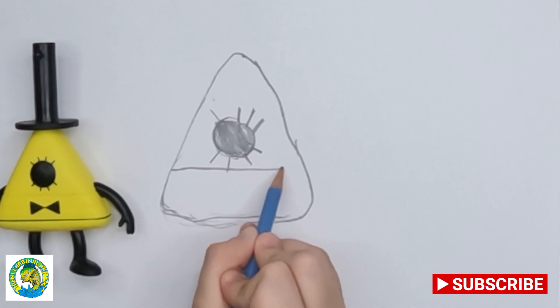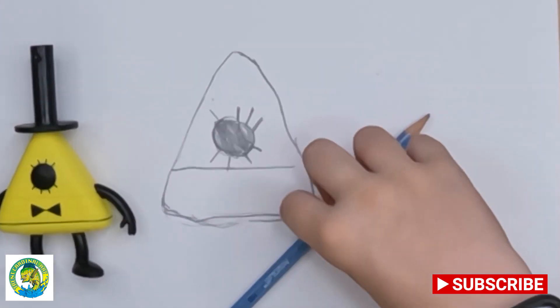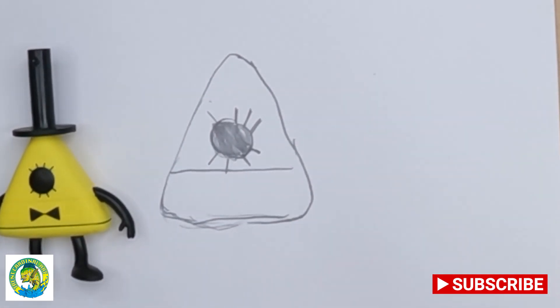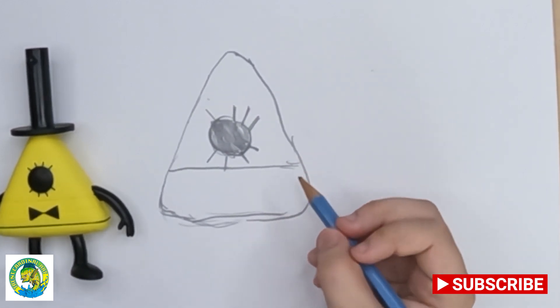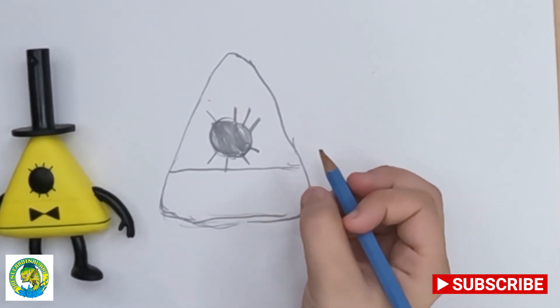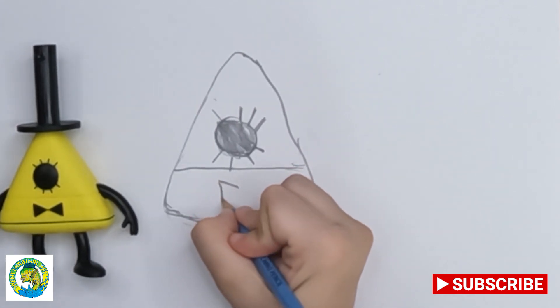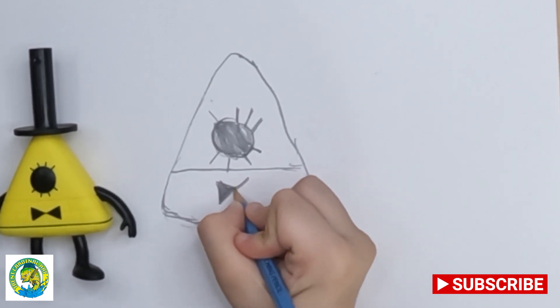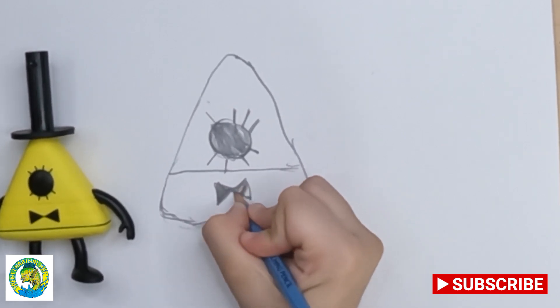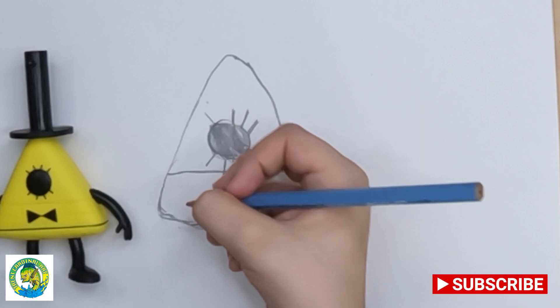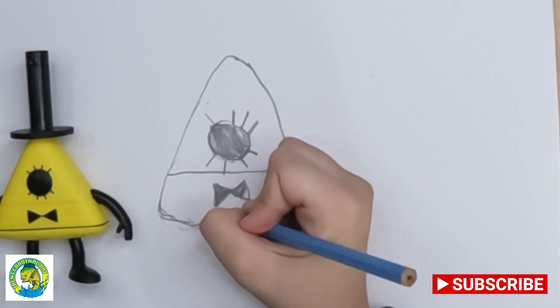Then you're going to make a line across. Then inside we're going to draw a triangle. Like a very small triangle. Then another triangle. But this time they're regular triangles. And they're spiky.